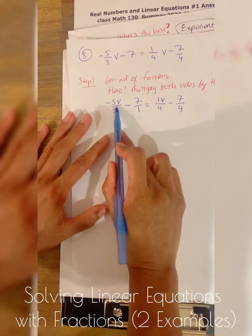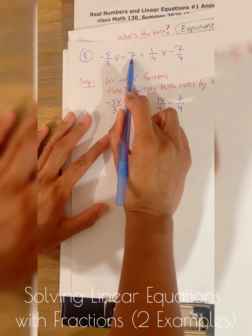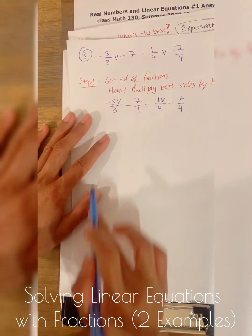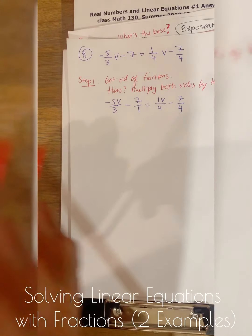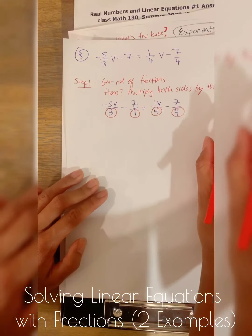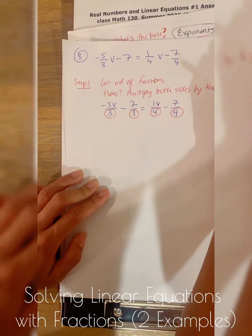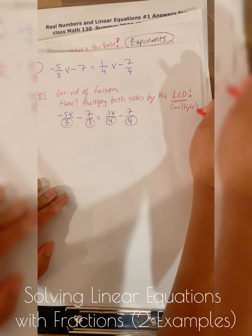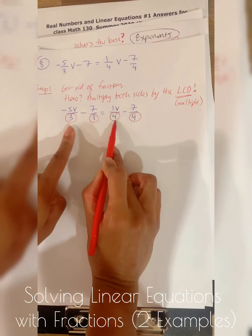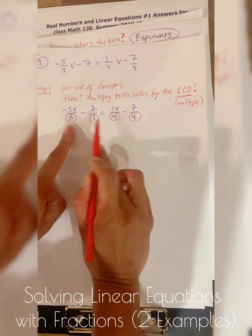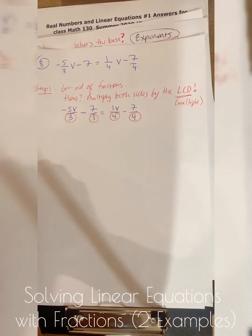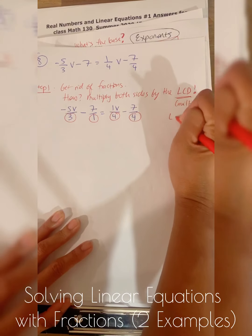If you have a whole number, you just write a one underneath. If you have a variable on the side, that means it's in the numerator. Now I look at the denominators and ask: what is the lowest common denominator? The denominators are 3, 1, 4, and 4 — so effectively 3 and 4. What multiple do they have in common? The number 12. So the LCD is 12.